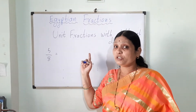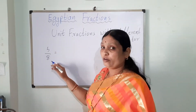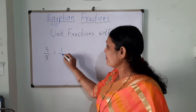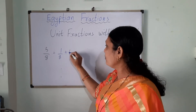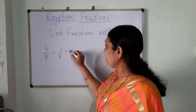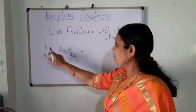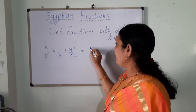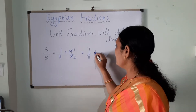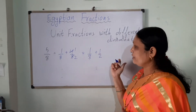Let's take 5 upon 8 as an example. 5 upon 8 can be split as 1 upon 8 plus 4 upon 8. Now 4 upon 8 simplifies — 4 ones are 4 and 4 twos are 8 — so 5 by 8 can be written as 1 upon 8 plus 1 upon 2. These are unit fractions with different denominators.